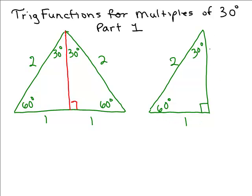What we want to know is how long is this piece right here? So let's use the Pythagorean theorem. We're trying to find what that is. So we have 1 squared plus x squared equals 2 squared by the Pythagorean theorem. So 1 squared plus x squared equals 2 squared or 1 plus x squared equals 4.